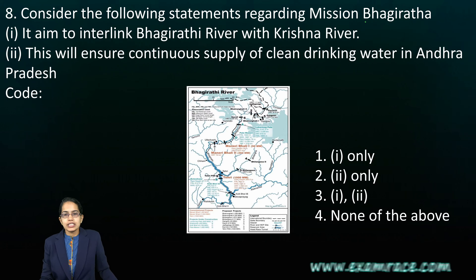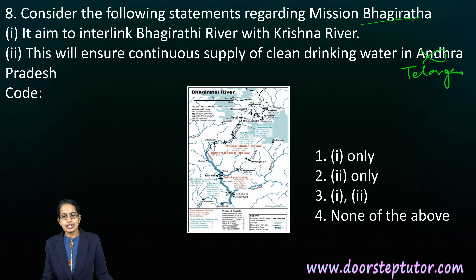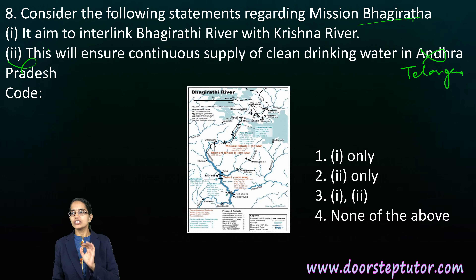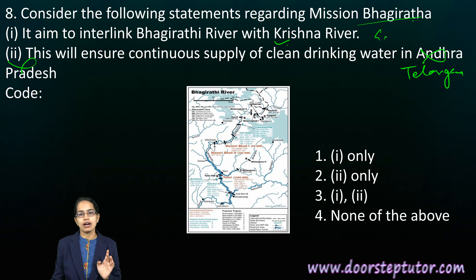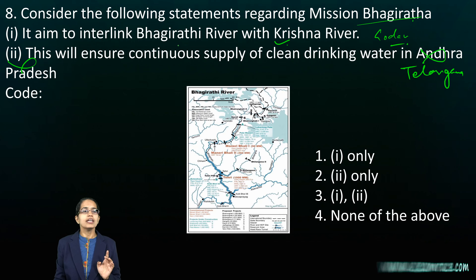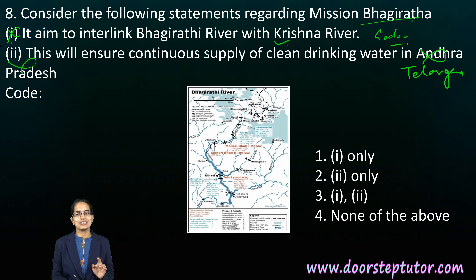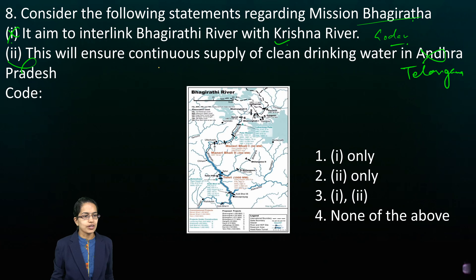The next is Mission Bhagirath. Mission Bhagirath is a project not in Andhra Pradesh but in Telangana, so the second statement automatically becomes incorrect. The idea is to supply water to each and every village, sourced from the Krishna as well as the Godavari rivers. So both options become incorrect in this case.